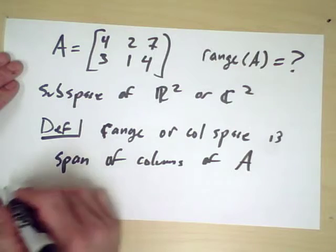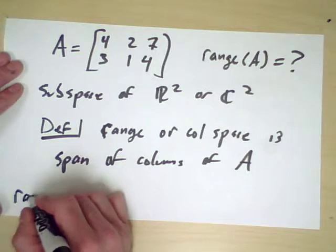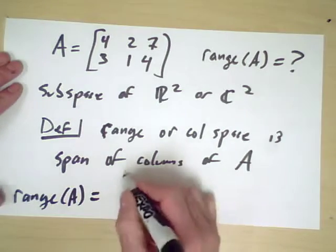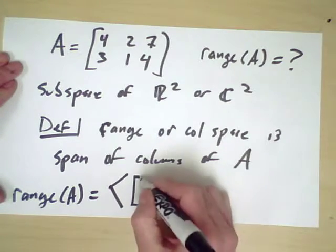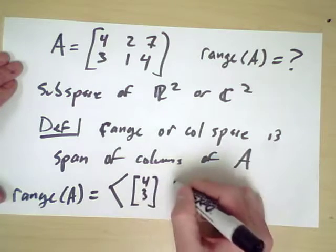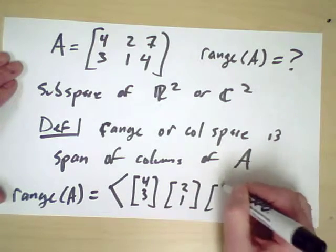So in this case, the range of A is the span, and I'll use an angle bracket like this to denote a span of some vectors, of (4, 3), (2, 1), and (7, 4).